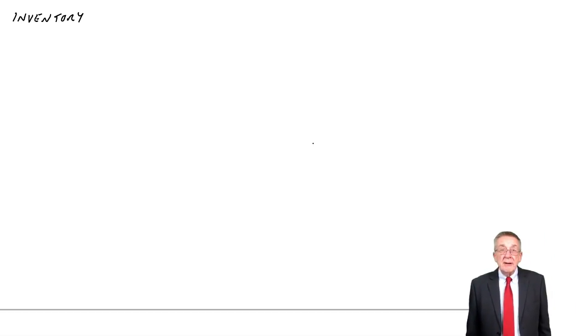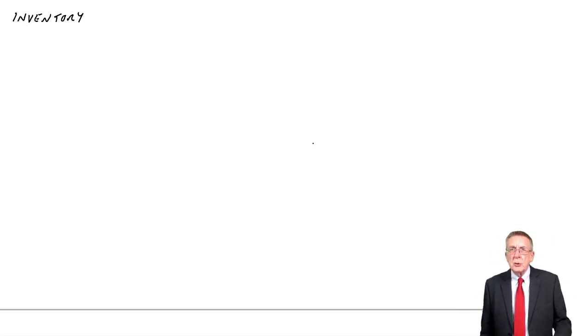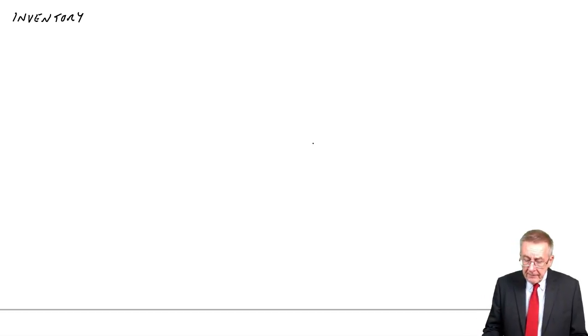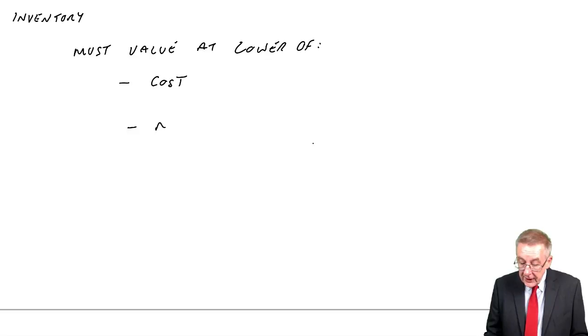The rules are in accounting standard number two. We don't need the numbers of these rules. But there are two important rules, and the first rule, which I'll deal with in this lecture, is that we must value at the lower of two things, the cost and what we call the net realizable value.